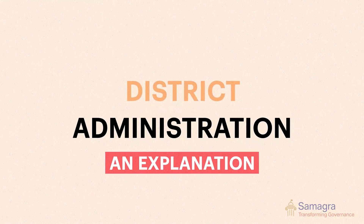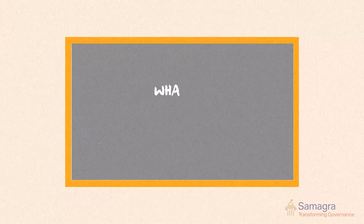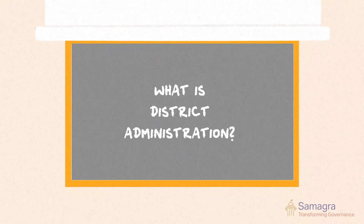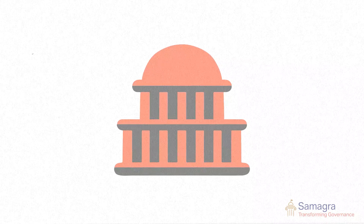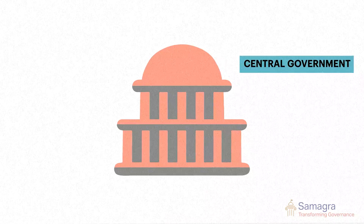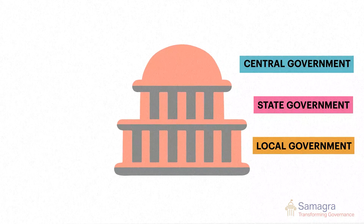Let's start with the most elementary question: what is district administration? To understand this, we have to first understand the hierarchy of the executive branch. There's the central government, the state government, and then the local government.